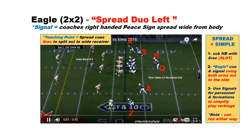Here's a visual of it. This is a two by two with the Eagle Series. You can see we're going to sub the H out with an S receiver towards the top of the picture. You simply use the Eagle signal with both arms out to the side, or the verbal, and the sub happens. We'll use signals for both personnel and formations so that it keeps the verbiage very simple.